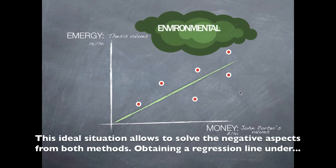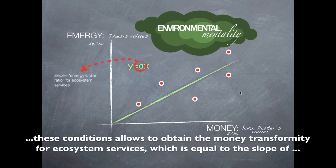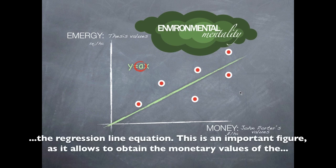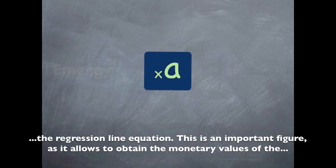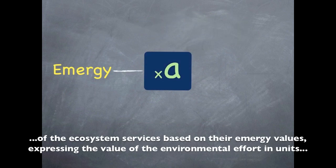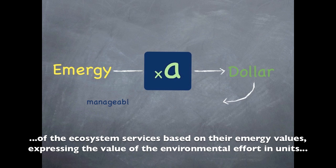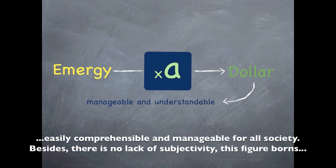This ideal situation also allows to solve the negative aspects from both methods. Obtaining a regression line under these conditions allows to obtain the money transformity for ecosystem services, which is equal to the slope of the regression line equation. This is an important figure, as it allows to obtain the monetary value of the ecosystem services based on their energy values, expressing the value of the environmental effort in units easily comprehensible and manageable for all society.